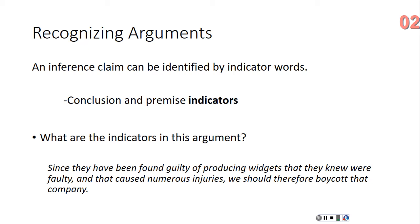Look at the argument at the bottom of the current slide: 'Since they have been found guilty of producing widgets that they knew were faulty and that caused numerous injuries, we should therefore boycott that company.' The premises are 'they have been found guilty of producing widgets that they knew were faulty and that caused numerous injuries.' The conclusion is 'we should boycott that company.' The indicator words are 'since' and 'therefore' — 'since' indicates the premises, 'therefore' indicates the conclusion.